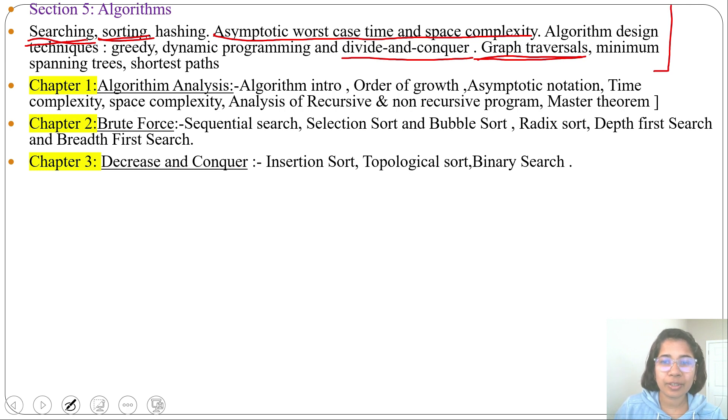third is decrease by variable size. Binary search comes under decrease by constant factor. Also you can say it comes under divide and conquer. We are decreasing the size and trying to solve.